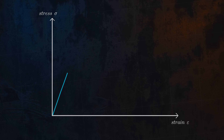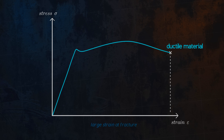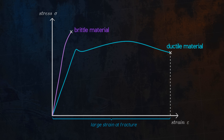Materials which undergo large amounts of plastic deformation before they break are called ductile materials. These materials fracture at very large strains. Mild steel and gold are examples of very ductile materials. Materials which fracture at very low strains with little to no plastic deformation are said to be brittle. Glass and ceramics like porcelain are examples of brittle materials. Because they don't deform plastically, the concept of yield strength is irrelevant for brittle materials.